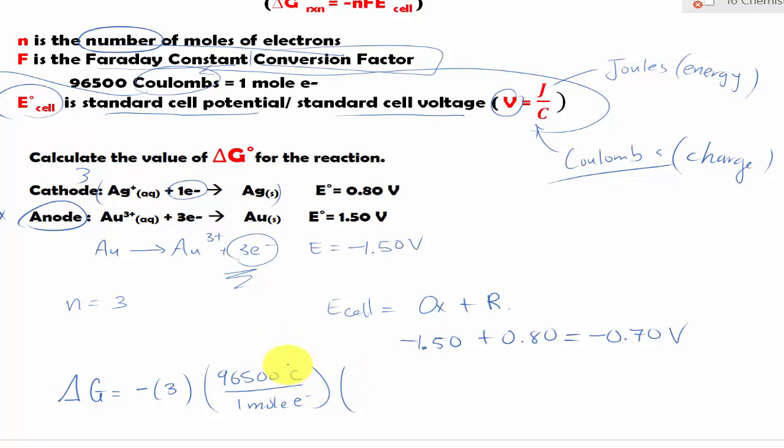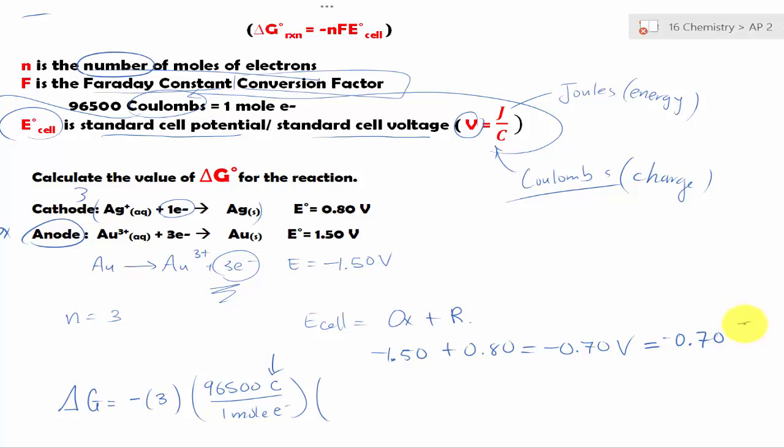Notice how the Faraday constant deals with coulomb. So we have to convert our E°_cell to in terms of joules and coulomb. So that way we can cancel out the unit.